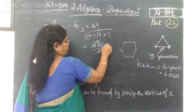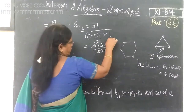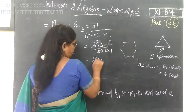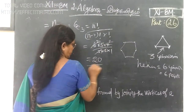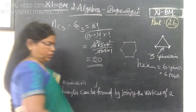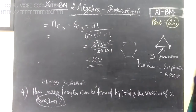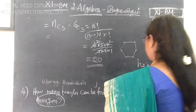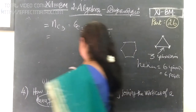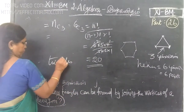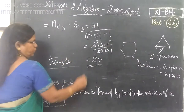The answer here is 20. So 2 plus 4 is... 5 plus 20, so the answer is 20. That is the number of triangles to be formed; we call it 20.